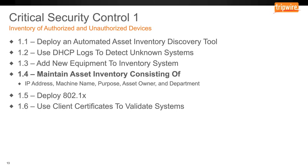Critical Security Control 1 is the inventory of authorized and unauthorized devices — knowing what hardware you have on your environment. There are six sub-items, but the most critical ones with a lower cost of entry and higher return on investment include: maintaining an asset inventory consisting of IP addresses and machine names, which can be done with open source tools like NMAP or commercial tools. Adding metadata — such as the purpose of the machine, asset owner, and the department it belongs to — provides context for auditors or incident response.